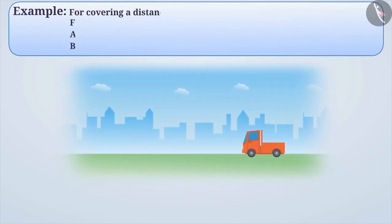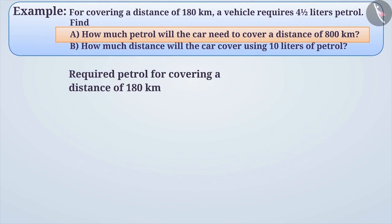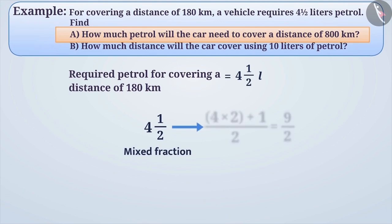Example 3: For covering a distance of 180 km, a vehicle requires 4.5 litres of petrol. Find out how much petrol is needed by a car to cover a distance of 800 km. Also, how much distance will this car cover using 10 litres of petrol? First, let's find out how much petrol is needed to cover a distance of 800 km. Required petrol for covering a distance of 180 km is equal to 4.5 litres. Here, we convert the mixed fraction 4.5 into an improper fraction and get 9 by 2. Therefore, required petrol for covering a distance of 180 km is 9/2 litres.